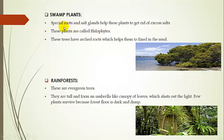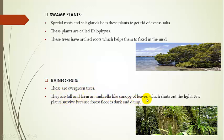The third category is swamp plants. These plants are also called halophytes. They have special roots and soil glands to help them get rid of excess salts. These trees have arch roots which help them to fix in the mud.